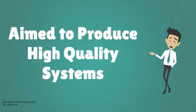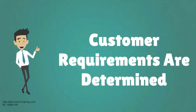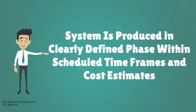An SDLC is aimed to produce high quality systems, similar to a manufacturing assembly line. The purpose is to meet or exceed customer expectations. First, customer requirements are determined. Then a system is produced in clearly defined phases within scheduled time frames and cost estimates.